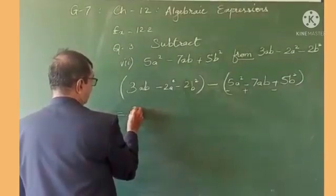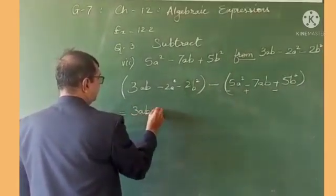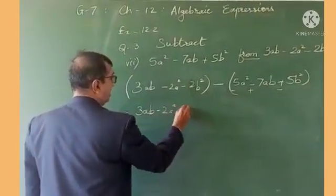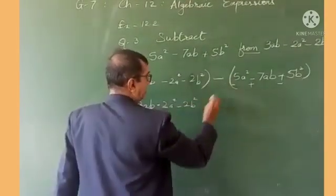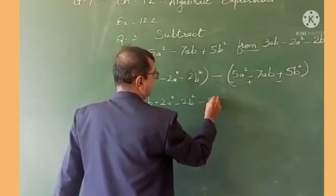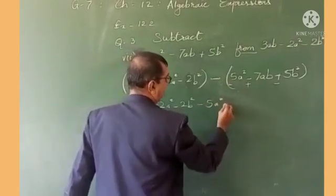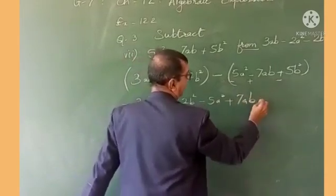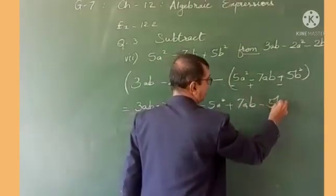So the next step is 3ab - 2a² - 2b² - 5a² + 7ab - 5b².